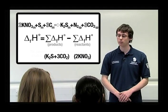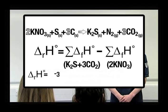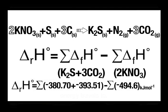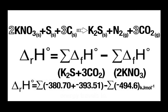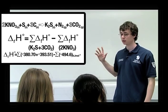Hannah, you've got the book in front of you. Would you mind giving me the values, please? Potassium sulphide is minus 380.70. Carbon dioxide, minus 393.51. Potassium nitrate, minus 494.6. Why haven't we put any values in for sulphur, carbon or nitrogen? Because they're elements that don't have standard enthalpy of formation. Only compounds have them. Precisely.